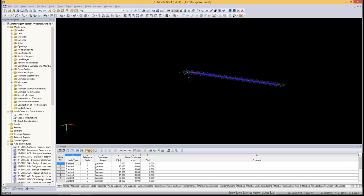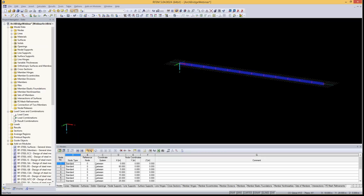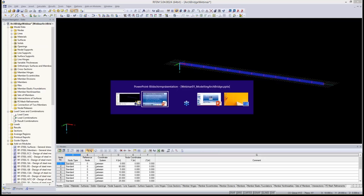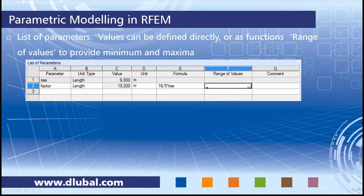That's the first beam defined. Now we want to define the nodes of the arc. To do this I need to explain parametric modeling in RFEM. You can access a list of parameters in the Edit menu. In there you can define any parameter names you want, enter a value directly or enter a formula, and RFEM does the calculation. You can provide a range of values — a minimum and maximum — and RFEM gives a warning if you go below the minimum. You can change the unit type, for example to weight per length or elasticity modulus, and switch between meters, millimeters, inches, and so on.